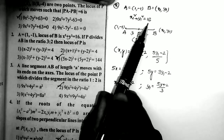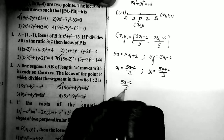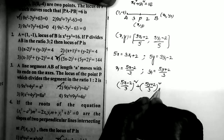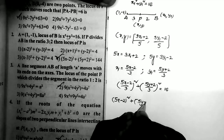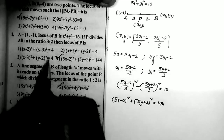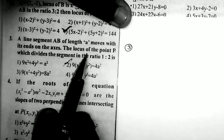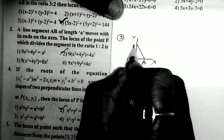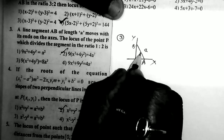Already we have x₁² + y₁² = 16. Now replacing these two values: ((5x - 2)/3)² + ((5y + 2)/3)² = 16. That is (5x - 2)² + (5y + 2)² = 144. This gives the locus of point P.